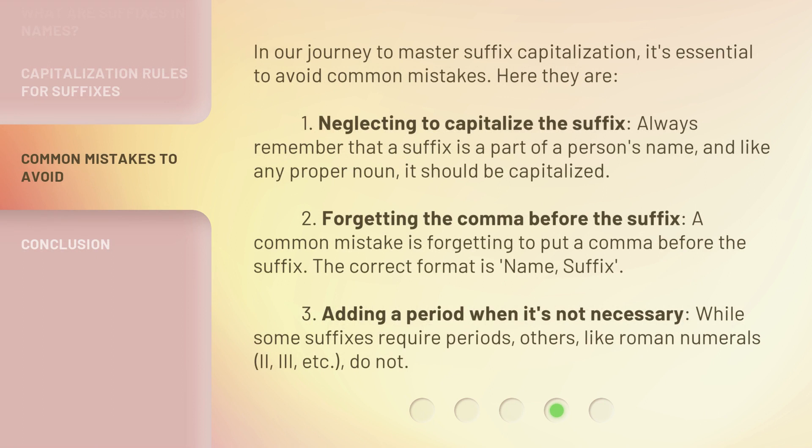In our journey to master suffix capitalization, it's essential to avoid common mistakes. Here they are. Mistake 1: Neglecting to capitalize the suffix. Always remember that a suffix is a part of a person's name, and like any proper noun, it should be capitalized. Mistake 2: Forgetting the comma before the suffix. The correct format is: Name, Suffix. Mistake 3: Adding a period when it's not necessary. While some suffixes require periods, others, like Roman numerals II and III, do not.